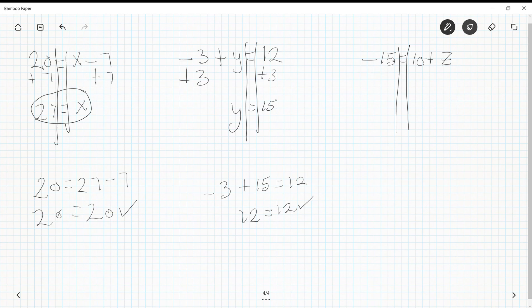And lastly, negative 15 equals 10 plus z. Well, this is a positive 10, so how do I undo a positive 10? Well, I need to subtract 10 from both sides. Minus 10, minus 10.